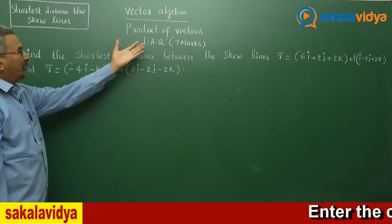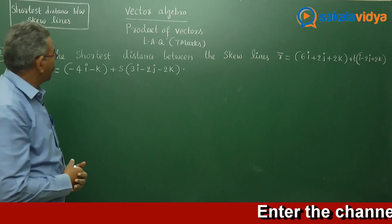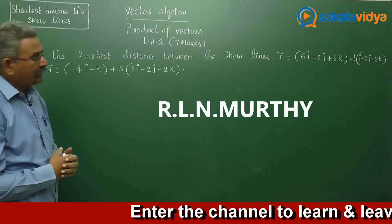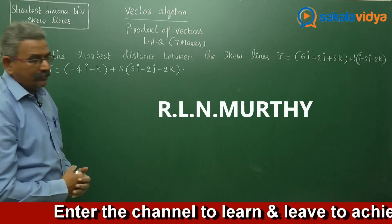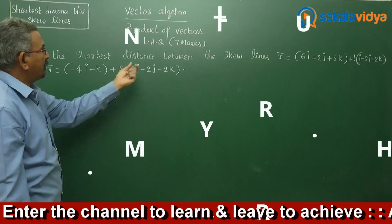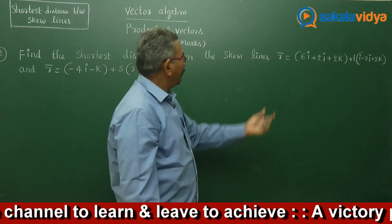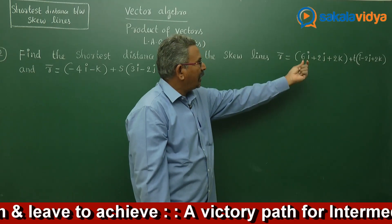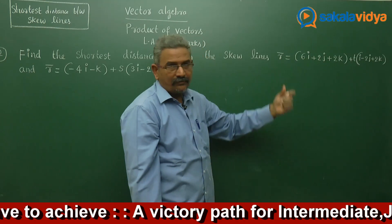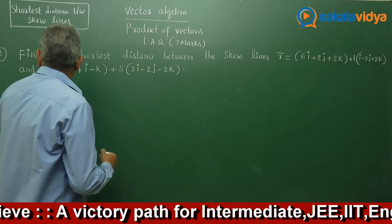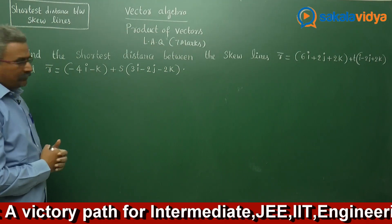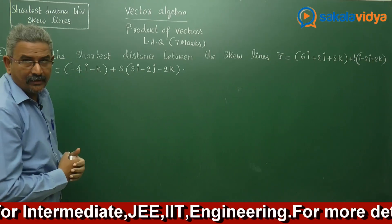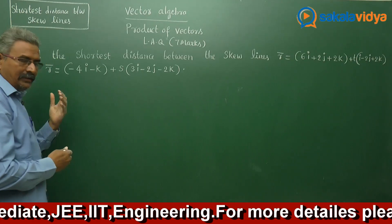Let us solve one more problem on product of vectors, also based on the shortest distance between the skew lines. Find the shortest distance between the skew lines: r bar equals 6i plus 2j plus 2k plus t times i minus 2j plus 2k, where t is a real number, and r bar equals minus 4i minus k plus s times 3i plus 2j minus 2k, where s is a real number.